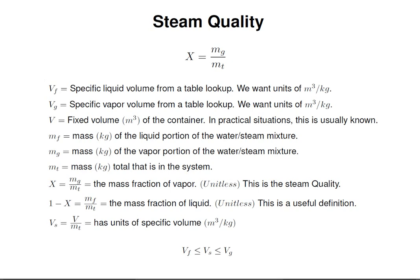x equals mg over mt is the mass fraction of vapor. This is called the steam quality. 1 minus x is the mass of the fluid divided by the mass total, the mass fraction of liquid. This is just a useful definition as we'll see when we do one of the examples.